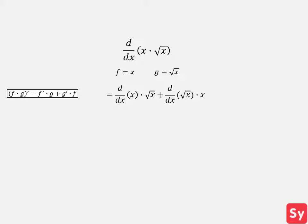We first want to compute the derivative of x. Using the power rule, this equals 1. Next, we compute the derivative of the square root of x. Using the power rule again, this equals 1 half times x to the negative half. We plug in these values. And now we can simplify this to equal 3 halves times the square root of x, our answer.